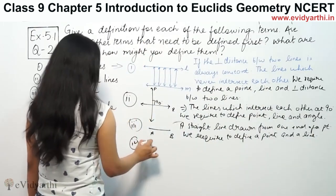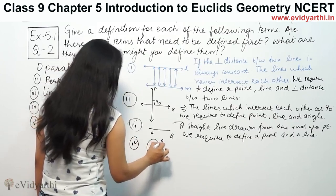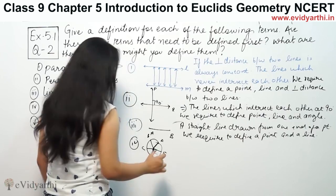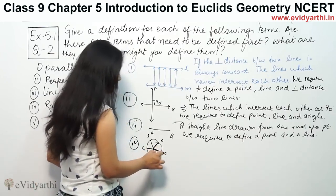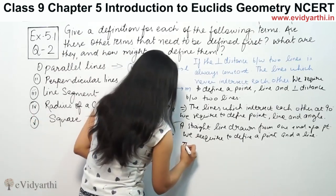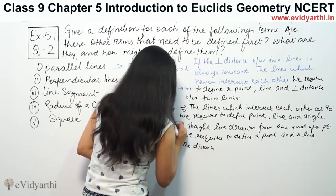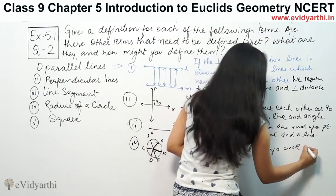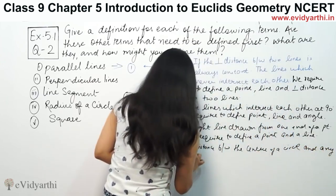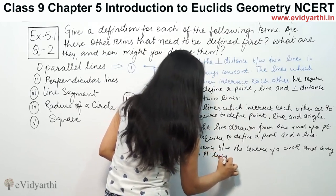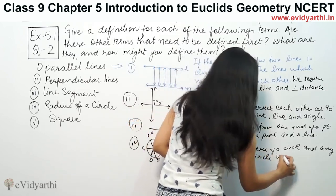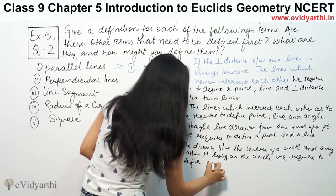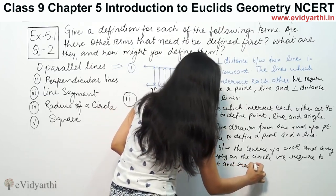The fourth part is the radius of a circle. Here is a circle with center O. OA, OB, OC, OD are all radii — the distance from the center of the circle to any point lying on the circle is called the radius. To define radius, we require to define point and radius (distance).